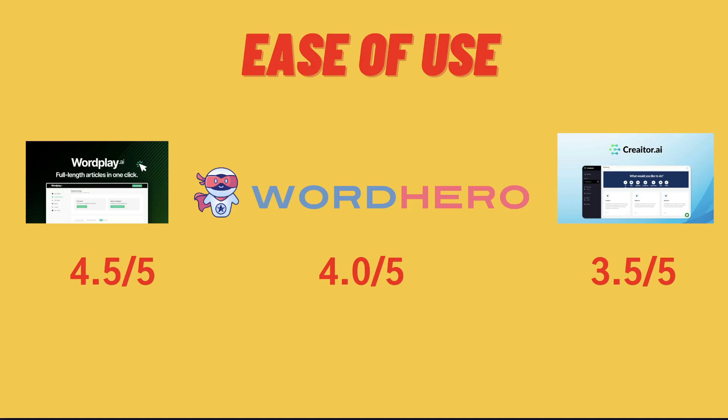For ease of use, I'd give Wordplay a score of 4.5 out of five — it is stupidly simple to use. All you have to do is enter a title, keyword, or outline and you get a full-length blog post. I'd give WordHero a score of 4.0 out of five — it's one of the easiest AI copywriters to use, and as you saw, we were able to generate an outline and high-quality body paragraphs very quickly. For Creator.ai, I'd give them a score of 3.5 out of five — I think they need some improvements on their UI, as the functionalities are a little tricky to use, especially for newcomers to AI copywriters.